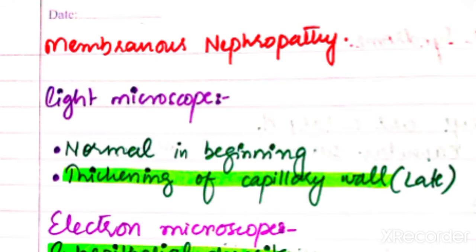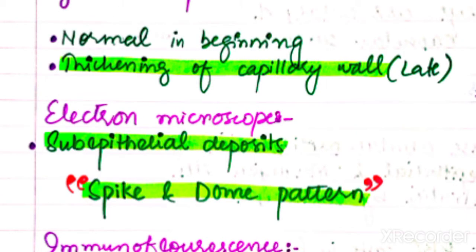In terms of morphology, we divide findings into three parts: light microscopy, fluorescence microscopy, and electron microscopy. Under light microscopy, the glomerulus initially appears normal, but the key finding is diffuse thickening of the capillary wall. Additionally, subepithelial deposits are present — these are the subepithelial deposits characteristic of membranous nephropathy.